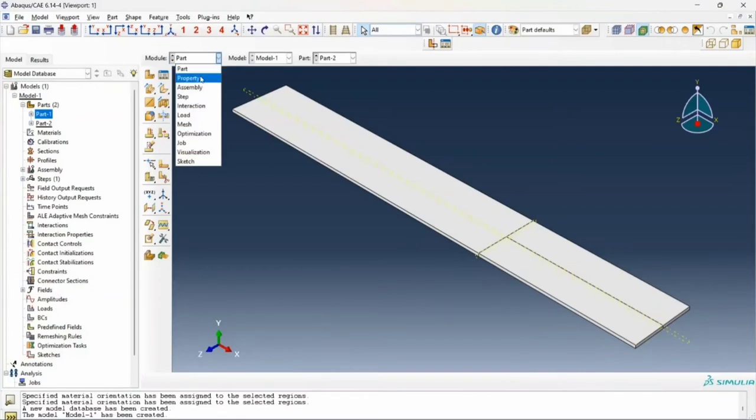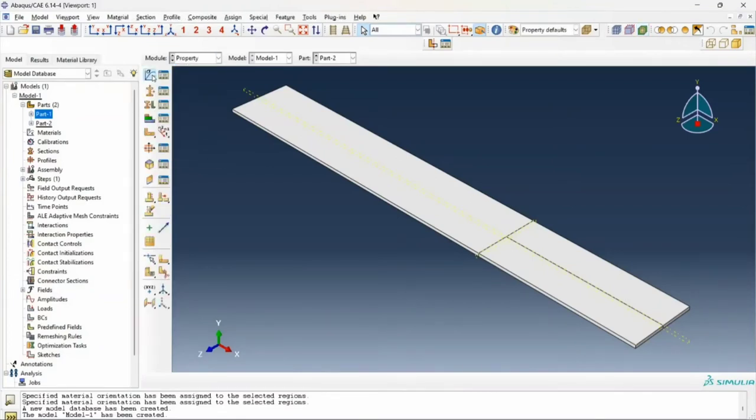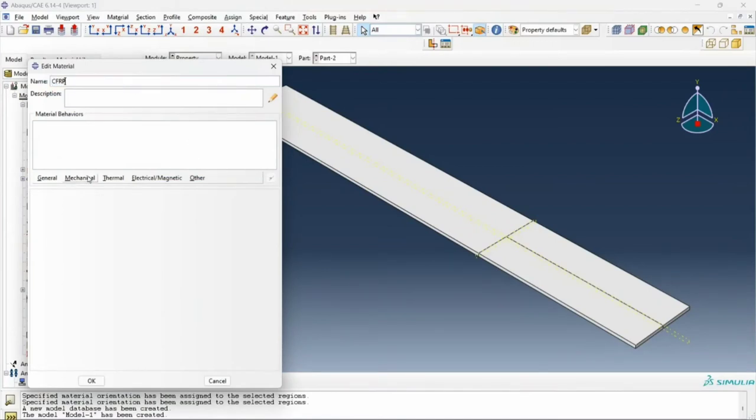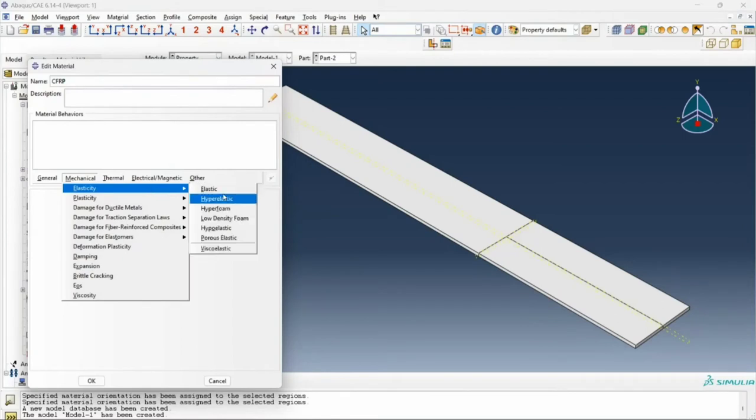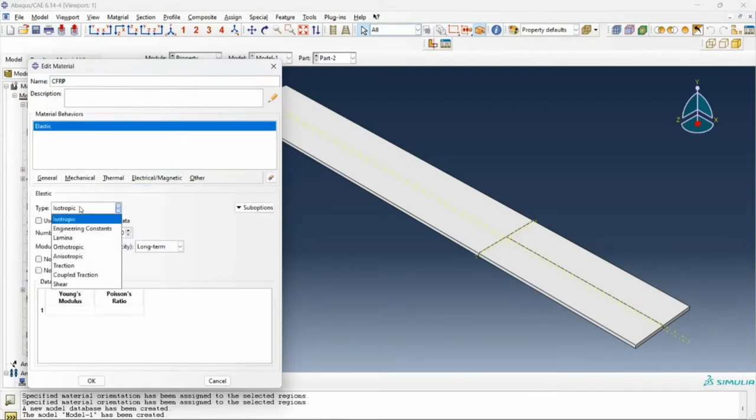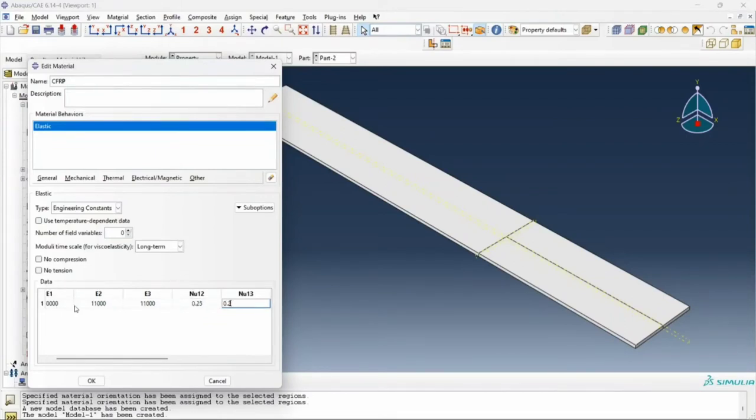Our next step is to define the material property. I create a material, I call it CFRP, and I define the mechanical properties. Since I've been given the engineering constants, I click on engineering constants. My E1 is 150 GPa, E2 is 11 GPa, as is my E3. My nu 12 and nu 13 are 0.25, my nu 23 is 0.45. G12 and G13 are 6 GPa, and G23 is 3.7 GPa.